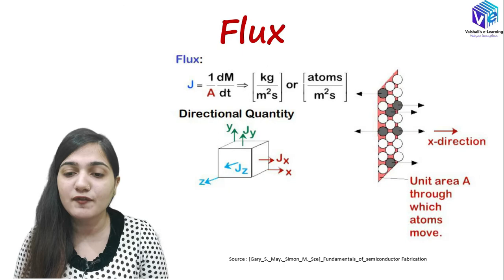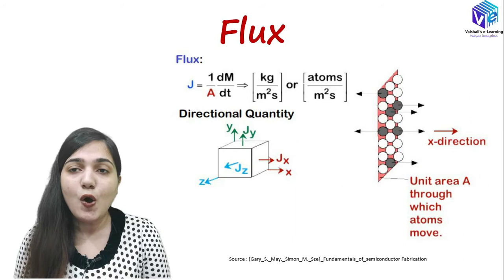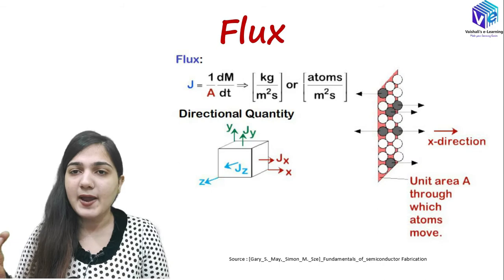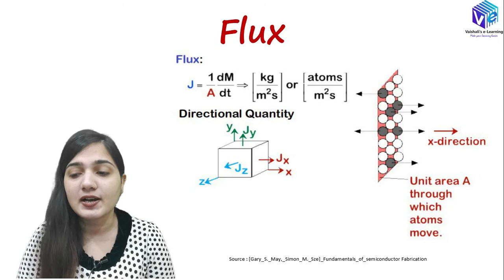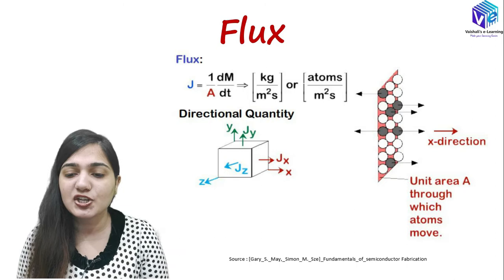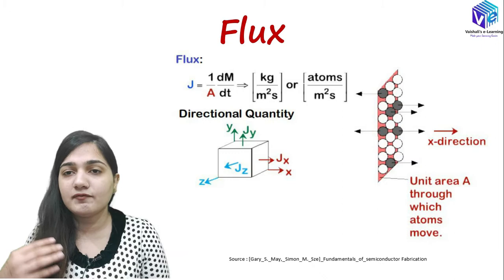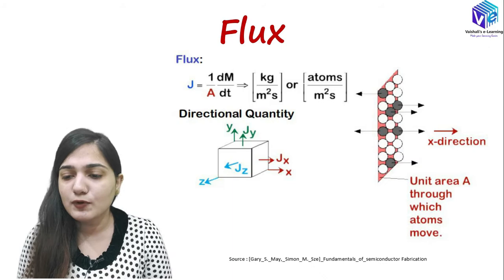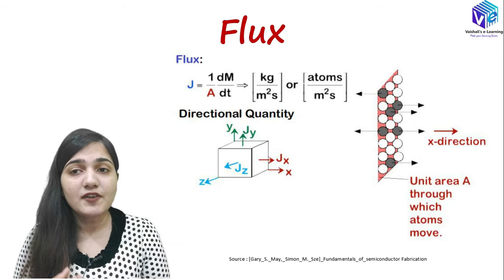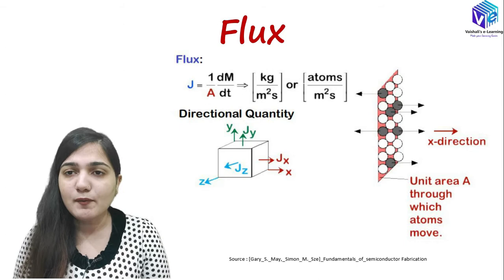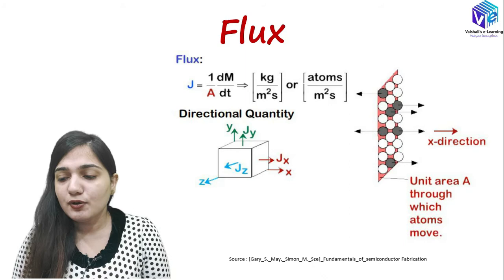Now coming to a quantity called flux. The flux is the change of mass or atoms per unit time per unit area. If I have some atoms moving from one position to another, how many atoms are moving per unit time per unit area is my flux — it tells me how fast the diffusion is happening. It can be measured in kg per meter squared second, or as atoms per meter squared second. Flux is a directional quantity — it tells me in which direction the atoms or molecules or mass is moving.